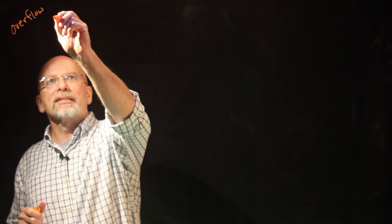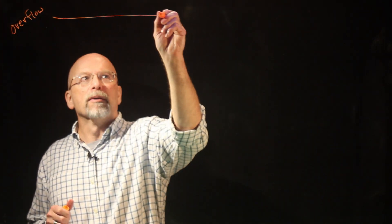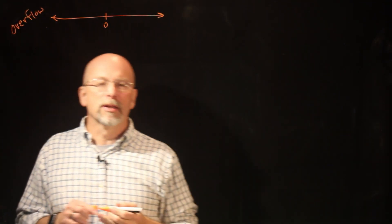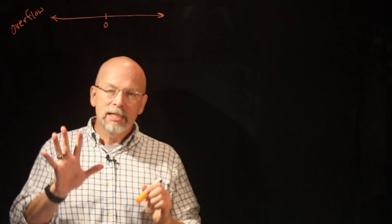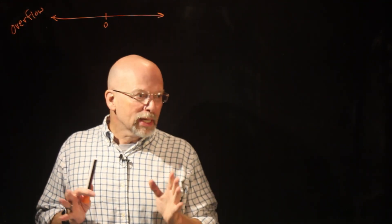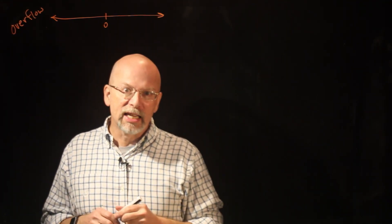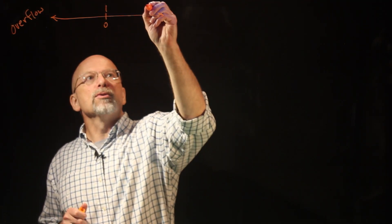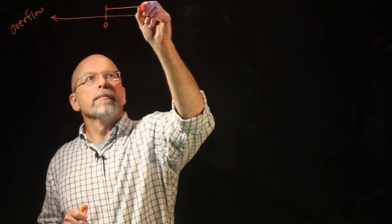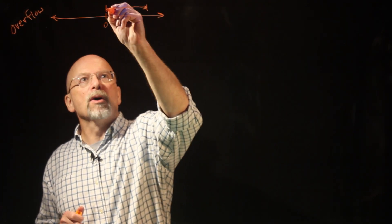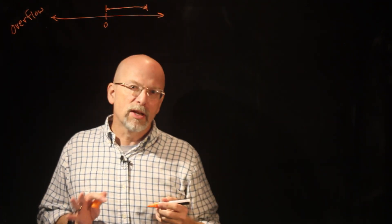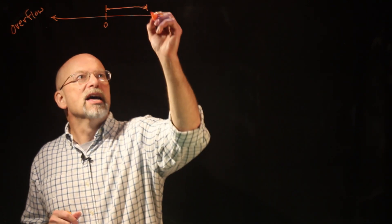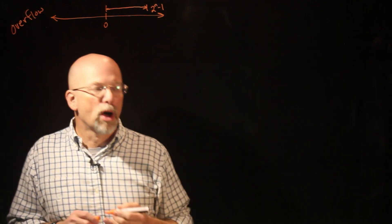Let's look at a number line. Somewhere in the middle you have zero. Unsigned binary is only capable of representing non-negative numbers, and it goes from zero up to some upper limit. That upper limit is defined by the number of bits we have. If you remember our discussion with unsigned binary, that value was two to the n minus one.